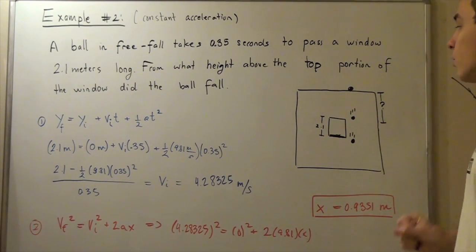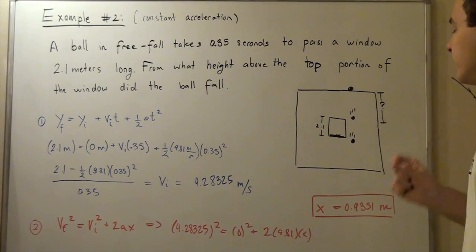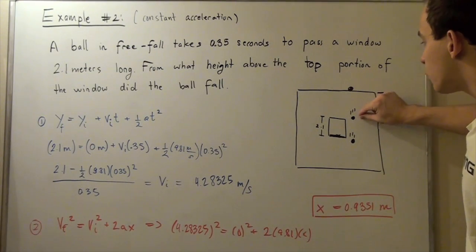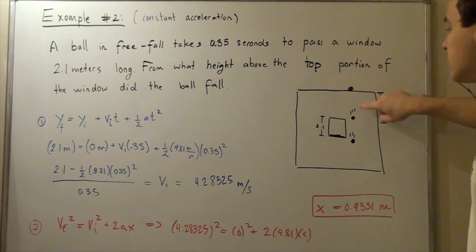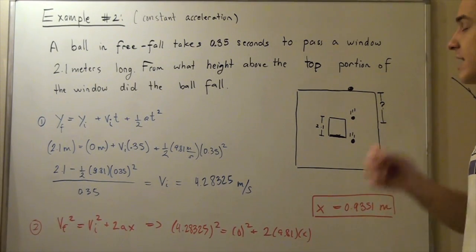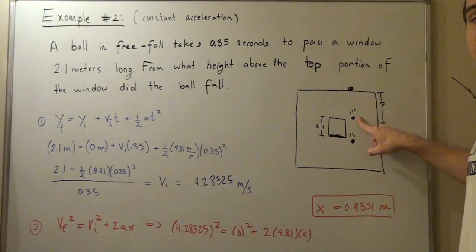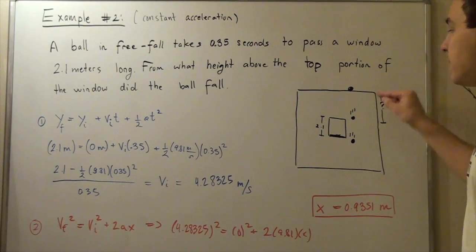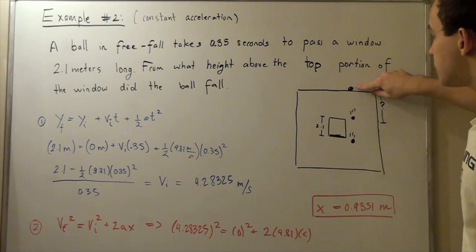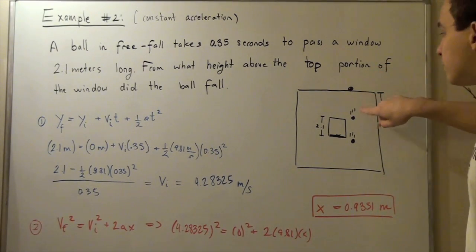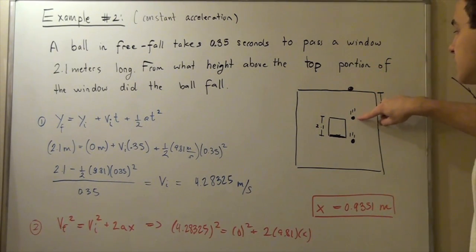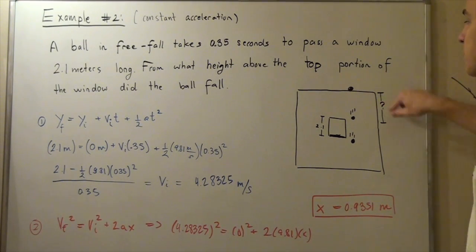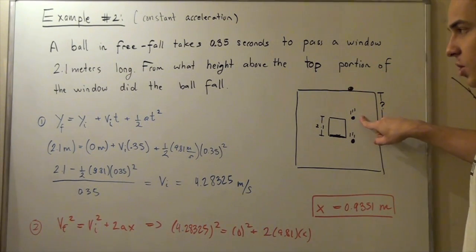We want to break this problem down into two steps. In our first step, we want to find the initial velocity of the ball — that is, the velocity it has already reached when it arrives at the top of the window. In our second step, we're going to use that same velocity as our final velocity, since the initial velocity from the roof is 0, and use it to find the distance from the roof to the top of the window.